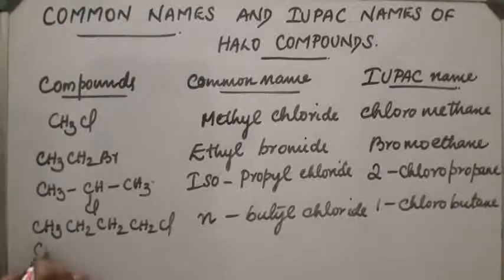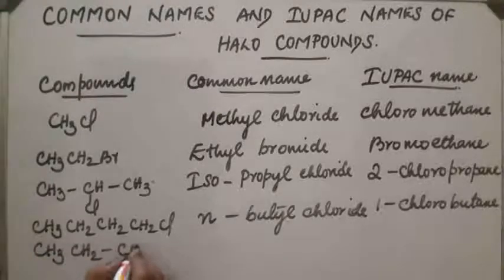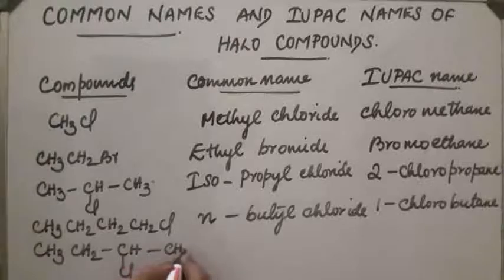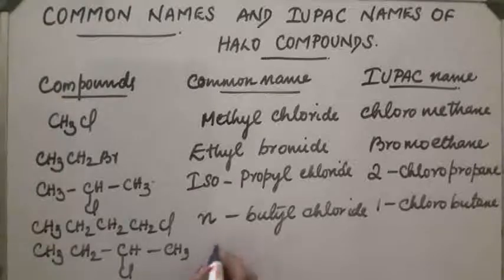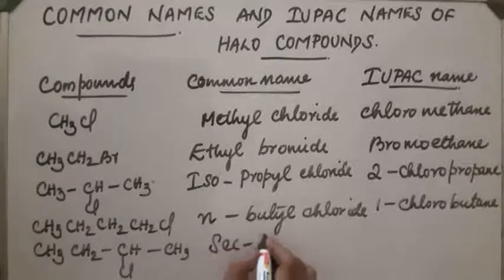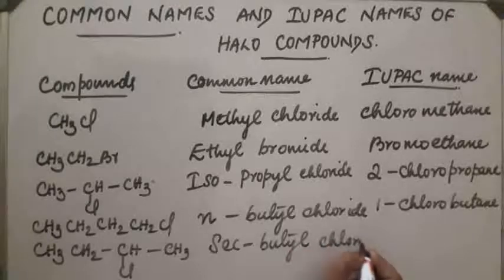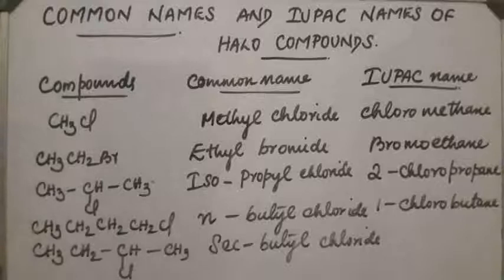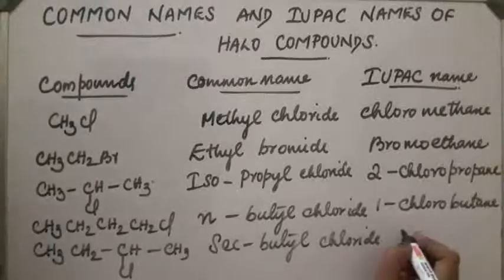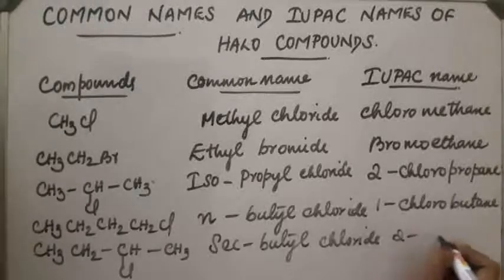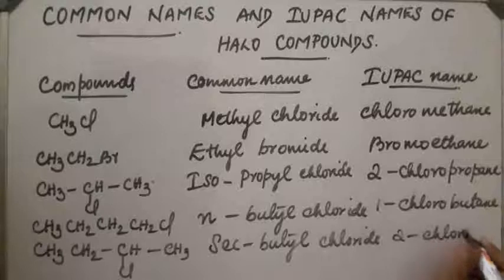Next compound is the secondary compound CH3CH2CHClCH3. The common name of this compound is secondary butyl chloride. For the IUPAC name, the chlorine is at the second position, so it is 2-chlorobutane.